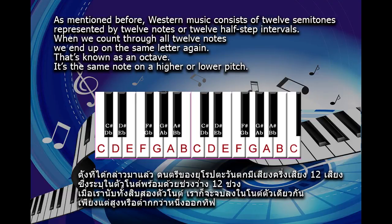As mentioned before, Western music consists of 12 semitones, represented by 12 notes or 12 half-step intervals. When we count through all 12 notes, we end up on the same letter again. That's known as an octave — it's the same note on a higher or lower pitch.